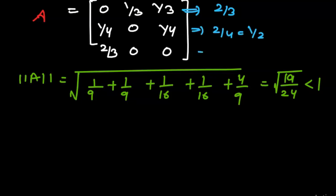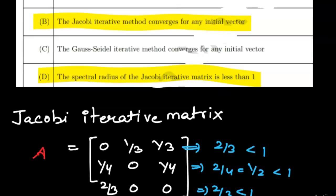As we can see, all these values are less than 1. If all row sums are less than 1, then the Gauss-Seidel iterative method converges for any initial vector. So option C is also correct.